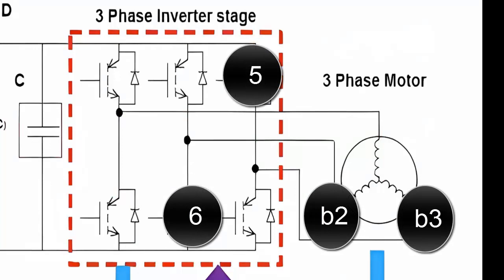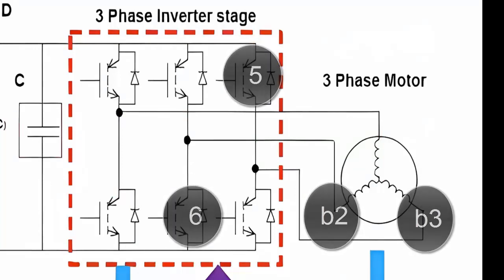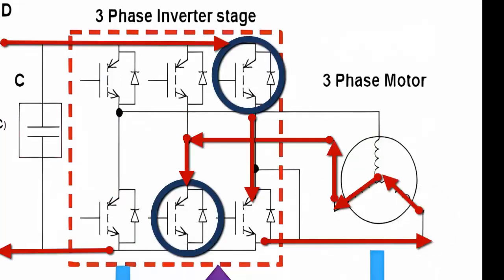Strategy 6: By activating transistor 5 to allow the current flow to coil 3, it is necessary to simultaneously activate transistor 6, allowing the current to exit through coil 2.